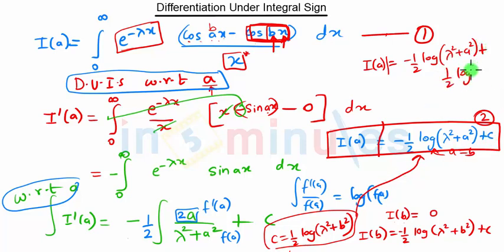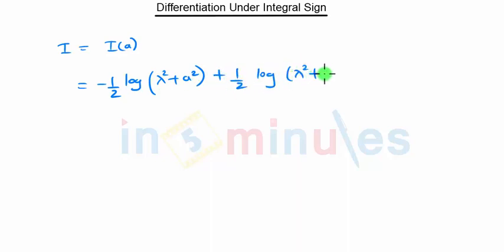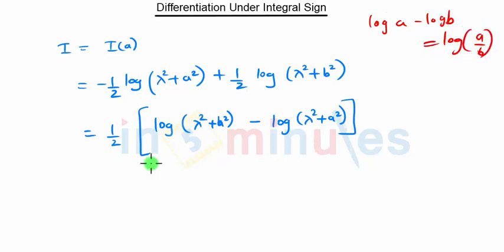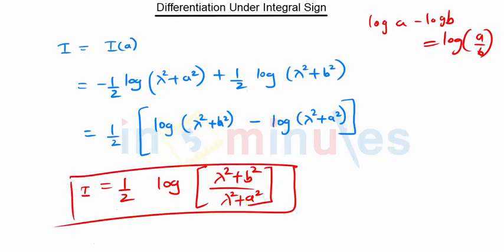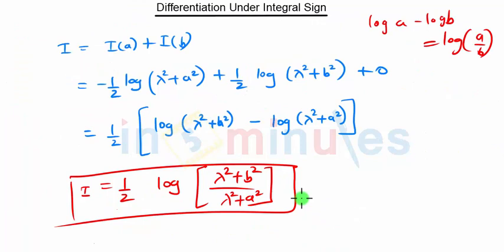Substituting C back: I(a) = −½ log(λ² + a²) + ½ log(λ² + b²). Taking ½ common: I(a) = ½ [log(λ² + b²) − log(λ² + a²)] = ½ log((λ² + b²)/(λ² + a²)), using log a − log b = log(a/b). This matches the required expression, hence proved.